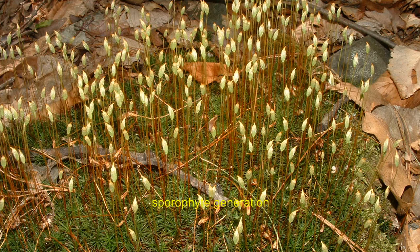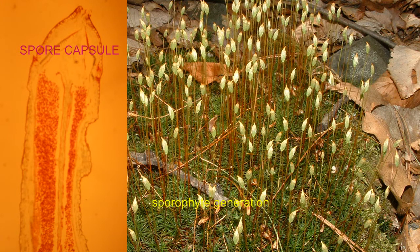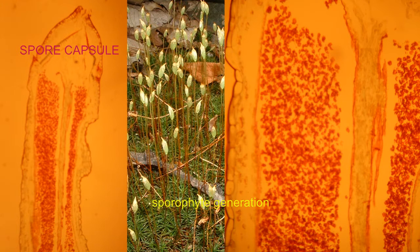Once sperm fertilize the ova, the diploid sporophyte is produced. The sporophyte then develops on the gametophyte generation. It is not free-living — it is dependent on the gametophyte.